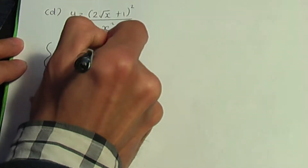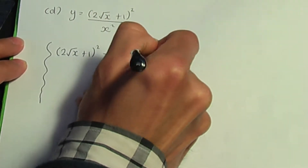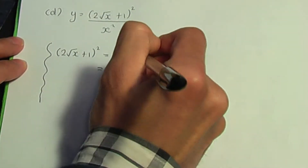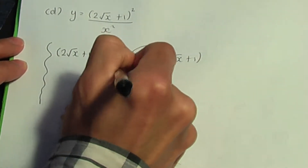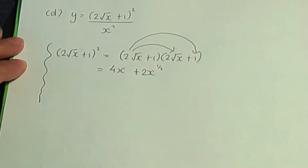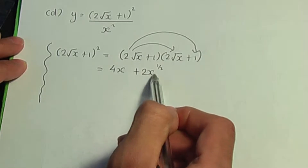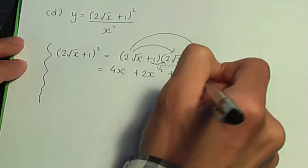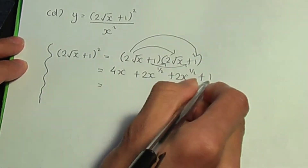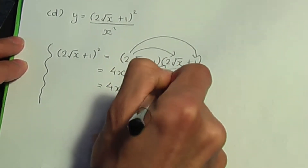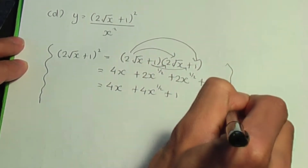In the numerator I have (2√x + 1)², which is the same as (2√x + 1) times another (2√x + 1). So 2√x times 2√x is 4x. 2√x times 1 is 2√x, written as 2x to the power half — remember to write it in the form ax^n because you'll be differentiating later. 1 times 2√x is another 2x to the half, and 1 times 1 is 1. Simplifying, I have 4x plus 4x to the half plus 1.